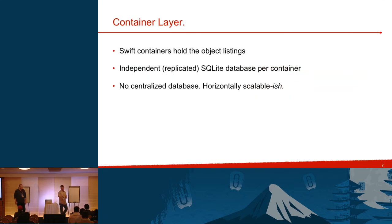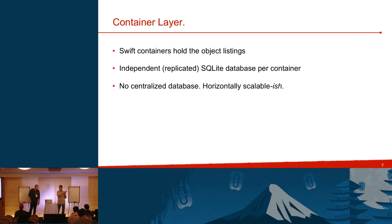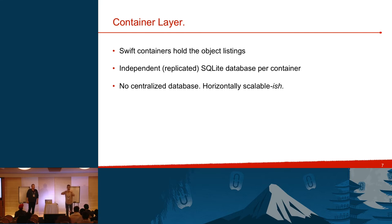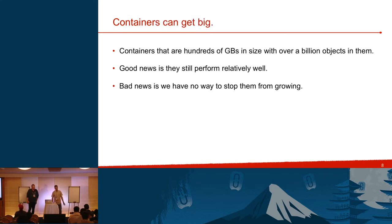Object container listings, on the other hand, we do have problems with. The container layer holds all the listings of objects. Every single container in Swift is a separate independent SQLite database sitting on some server. The proxy loads it up, spits out the result. There's no centralized database — it's horizontally scalable, with an asterisk — because within one container it is not horizontally scalable. Containers can get very, very big, especially for SQLite. We have containers in the wild that are hundreds of gigabytes in size, with over a billion objects in them.